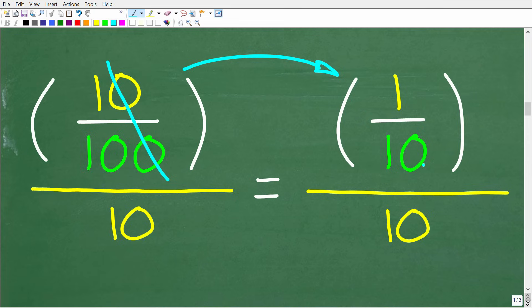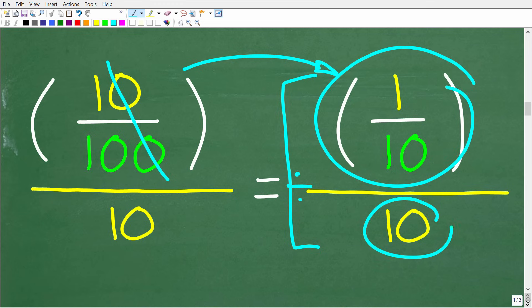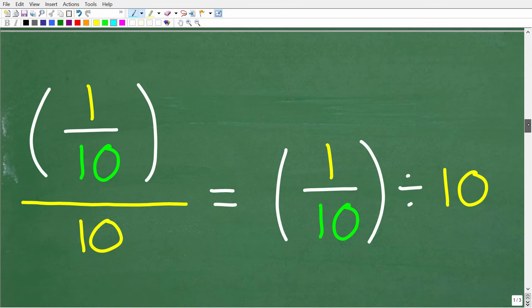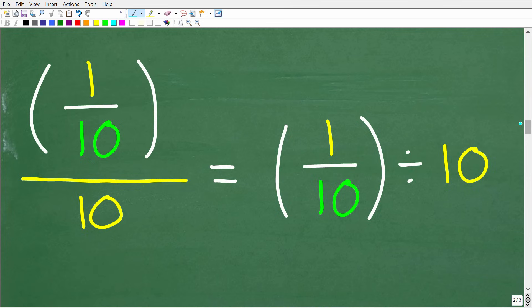Okay, so we still have a complex fraction here. We have 1 tenth divided by 10. So what we want to do is write this complex fraction differently. So we have 1 tenth divided by 10. So let's go ahead and write this complex fraction this way. All right, so 1 tenth divided by 10. We can either write it this way as a complex fraction, or we can express it this way, 1 tenth divided by 10.